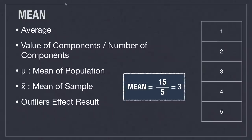The mean, or average, provides an average value by summing all values and dividing by the number of components. Mu is used to represent the mean of the population, and x-bar represents the mean of a sample. While it can be very useful, outliers are going to dramatically affect your results. For example, 1, 2, 3, 4, 5 has a mean of 3, which looks like it makes sense. However, 1, 2, 3, 4, 100 is going to have a mean of 22, which could cause some issues.